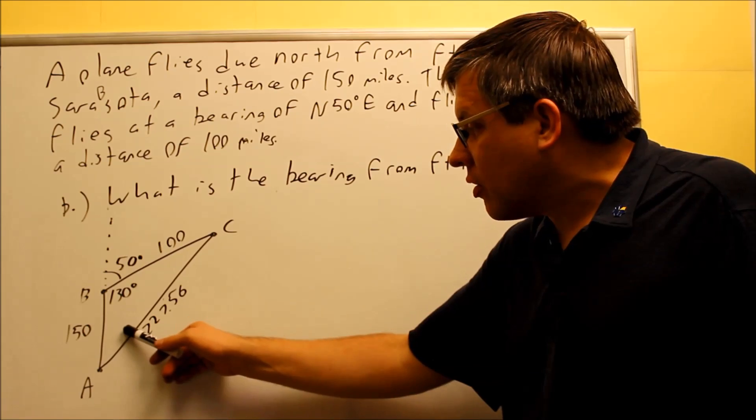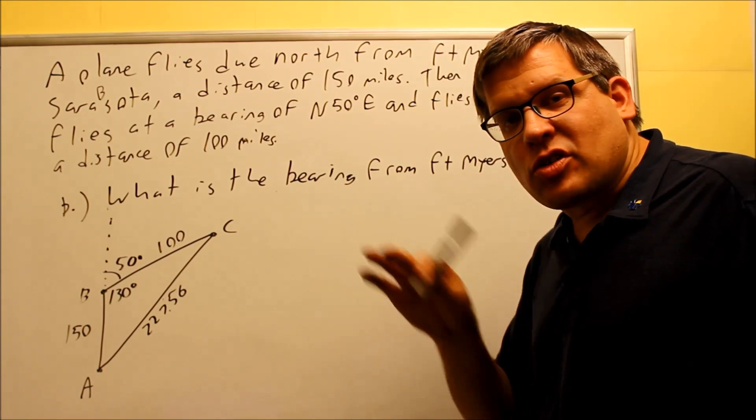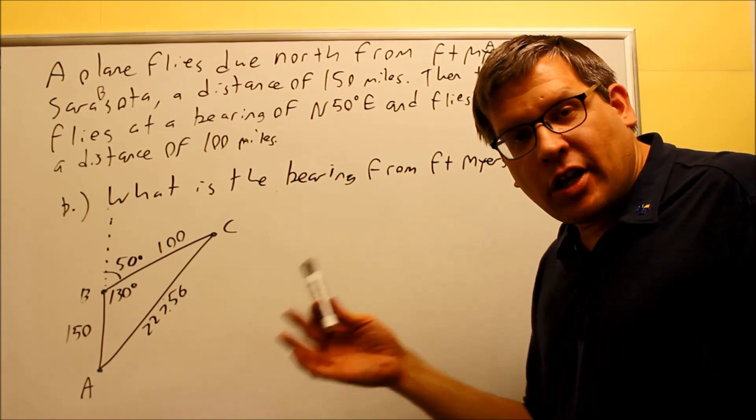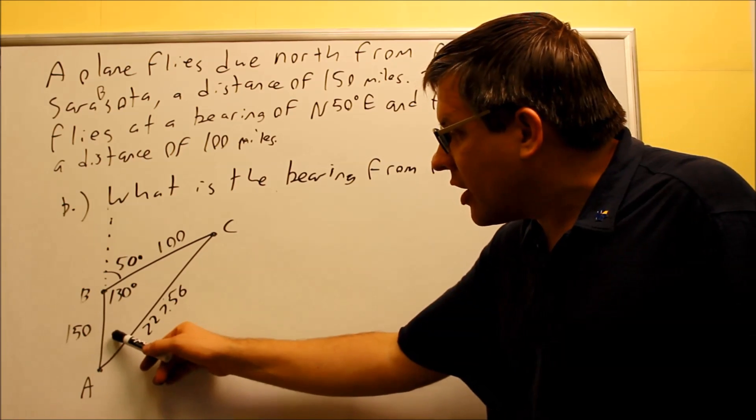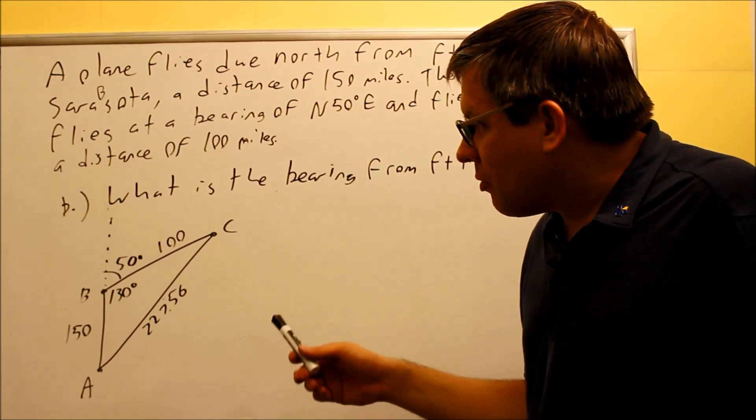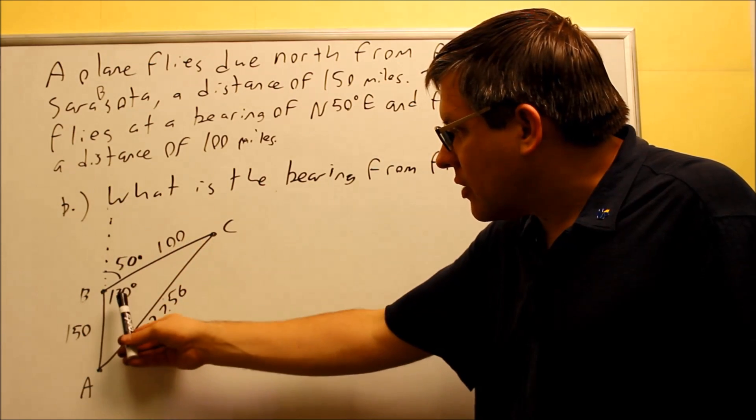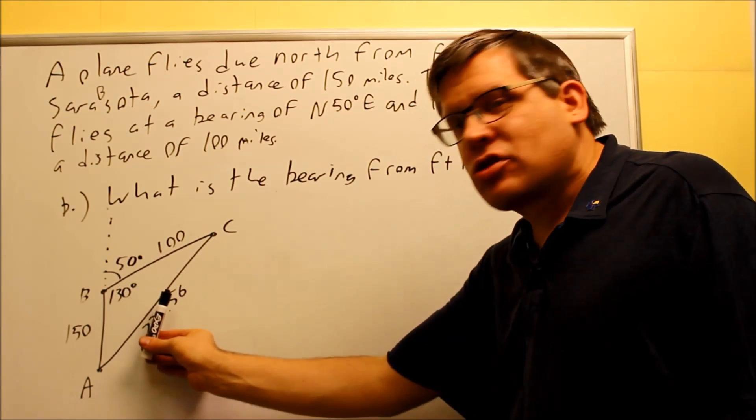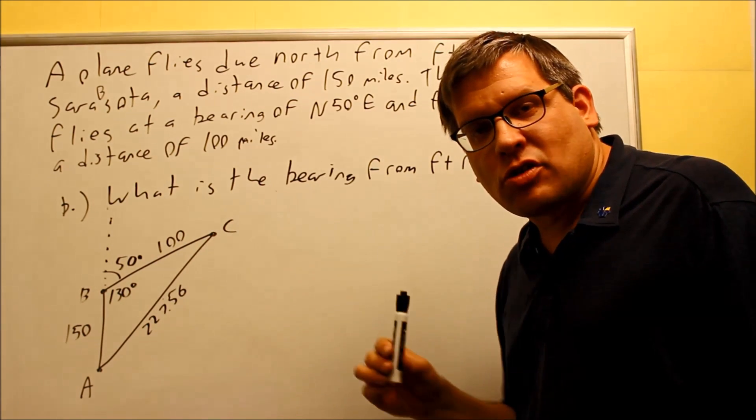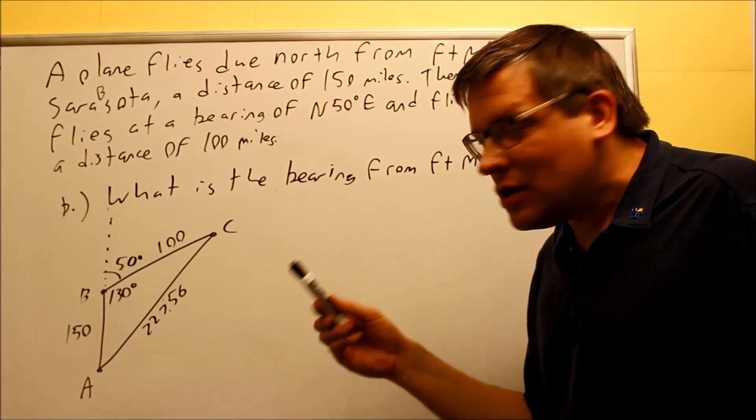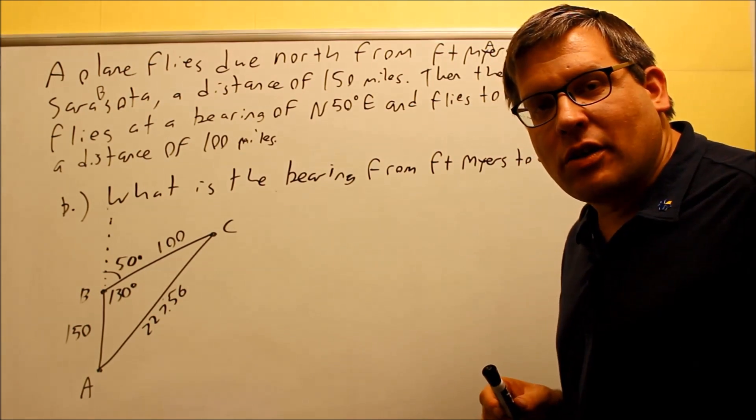once I find the angle inside the triangle, I don't have to worry about adjusting that, subtracting from 180 or 90. Whatever answer I get inside the triangle, that will be part of my answer. So I'm going to go north, and then it's going to be a certain amount of degree this direction to the east. So I know for sure my directional letters should be N and E, north and east. I've got to find out the angle that's inside there.